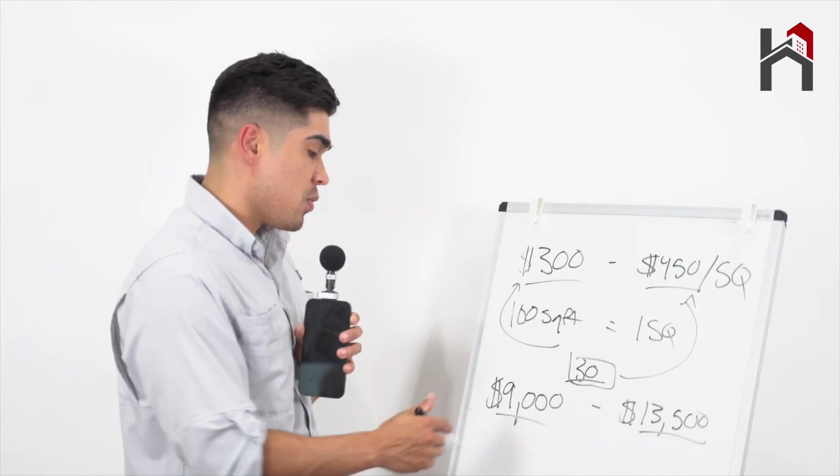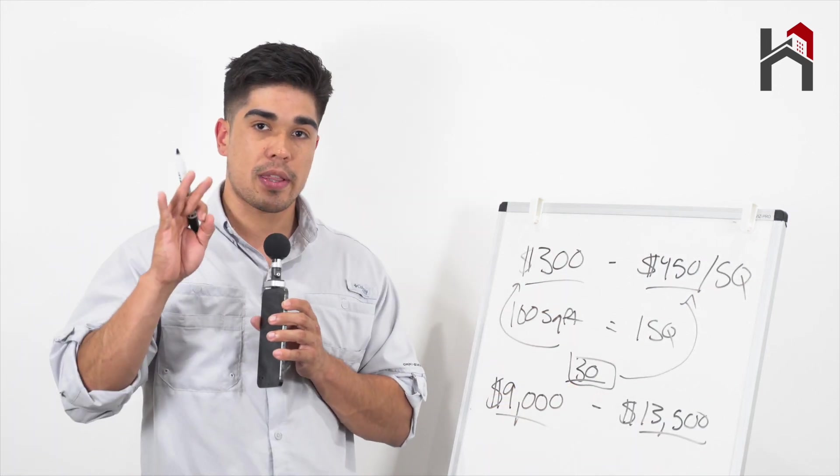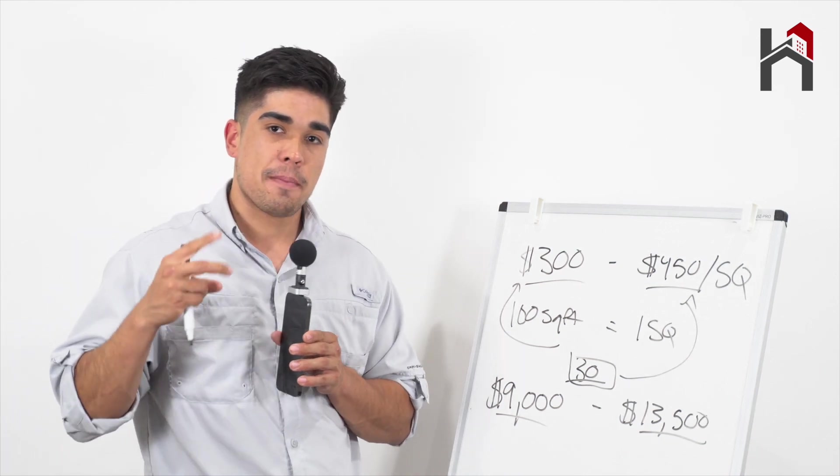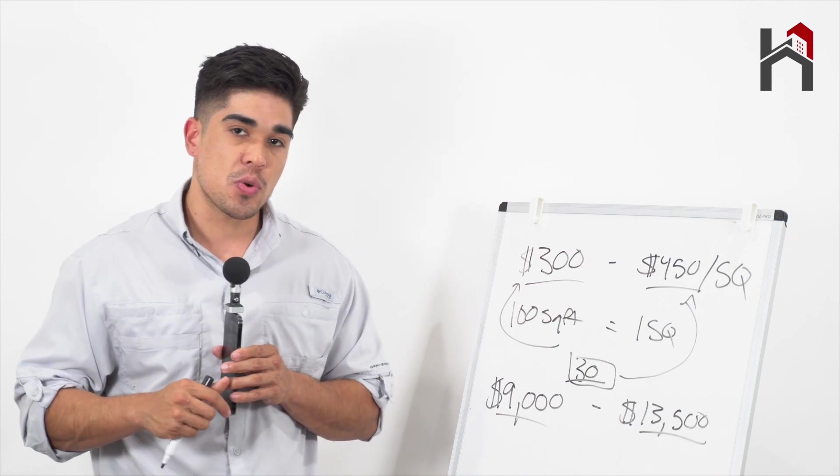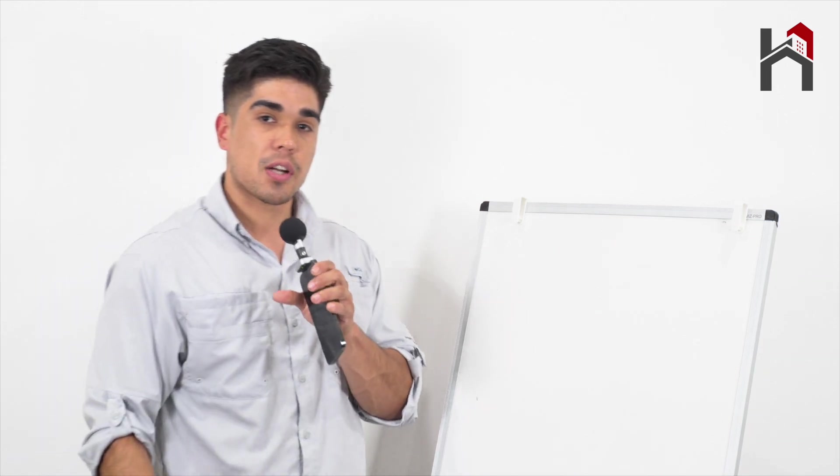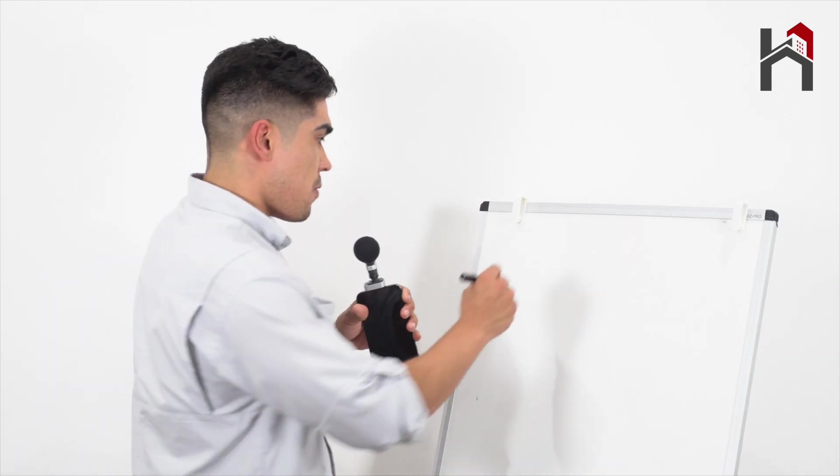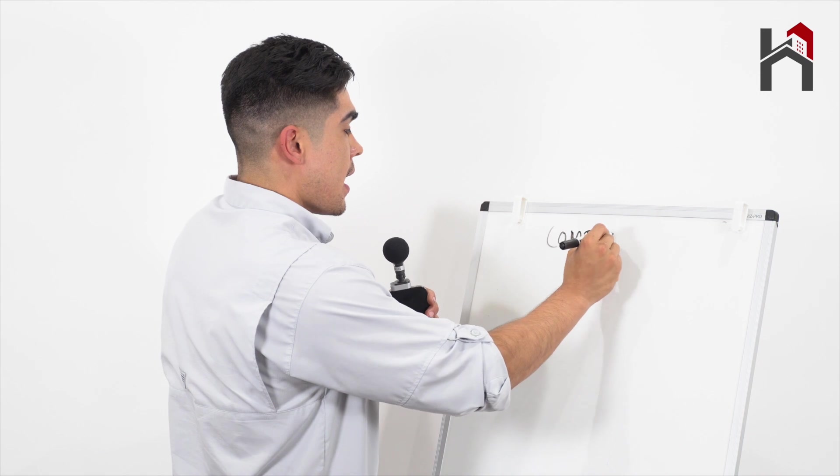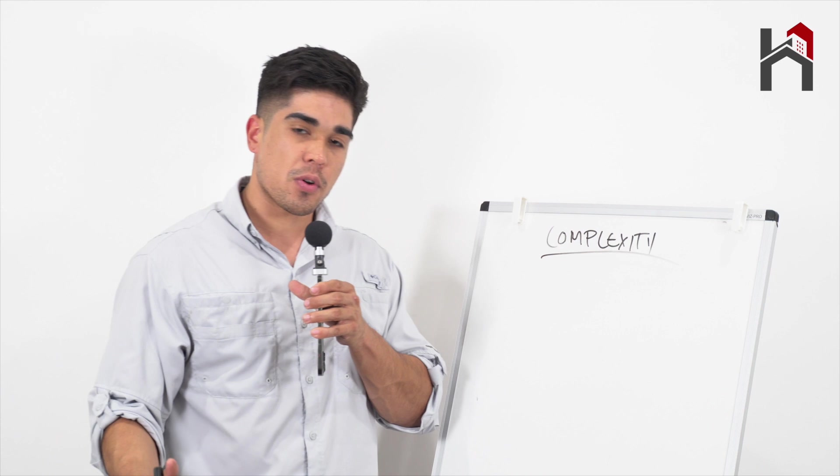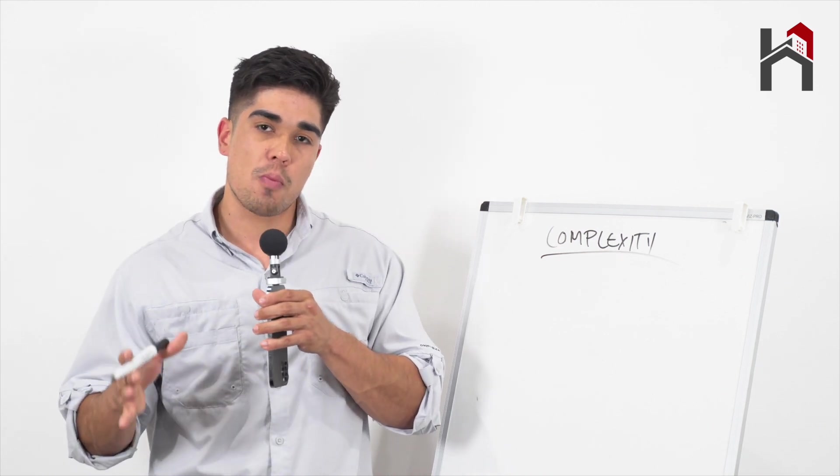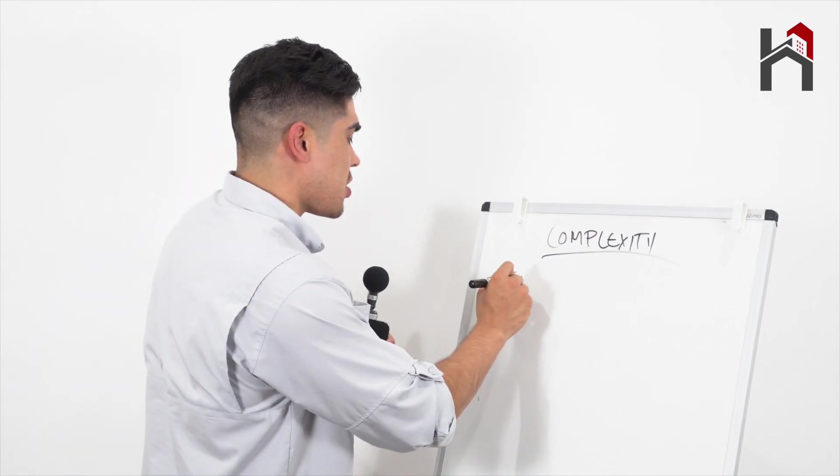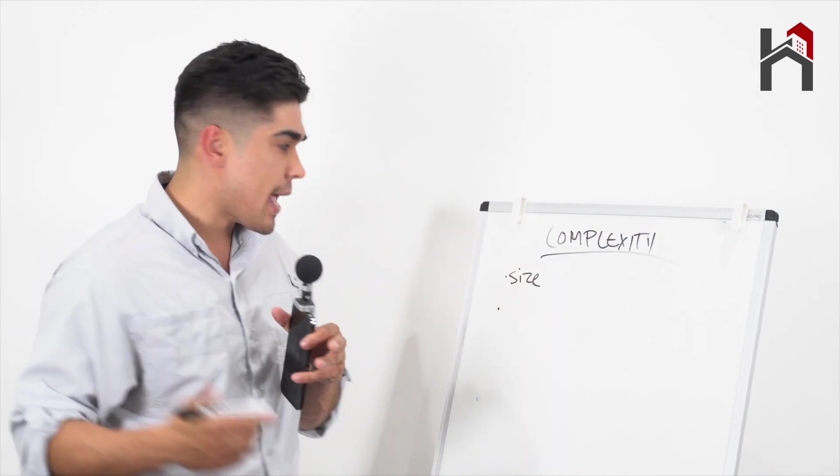Now, the difference between that $9,000 to $13,000 is going to come down to three things for your roof. Number one is how complex is your roof. Number two is what material is being used. And number three is who is the actual company that's installing that roof. Now let's talk about the first factor, which is pretty straightforward. This is the most easiest to actually understand. And this is the complexity of your roof.